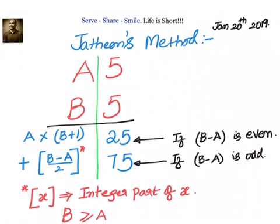On the left side of the answer, that will be equal to A into B plus 1, plus the integer part of B minus A divided by 2. If B minus A is odd, then B minus A by 2 will take the form of 1.5 or 2.5 or 3.5, in which case we take only the integer part.